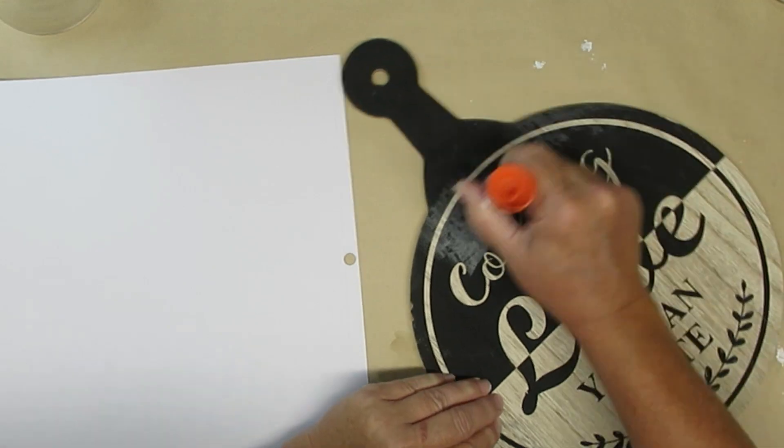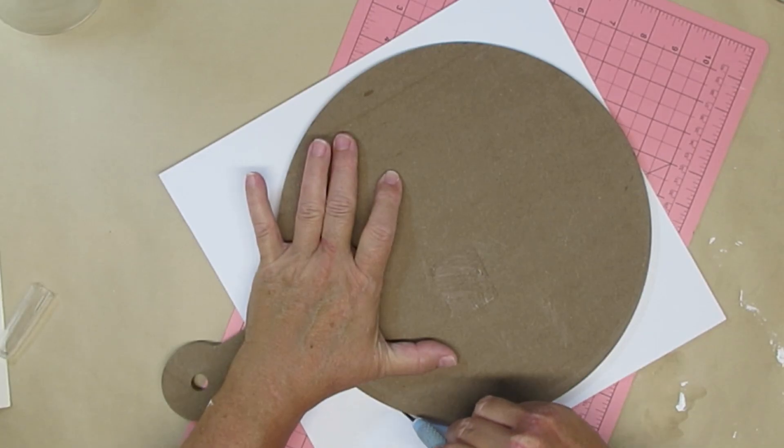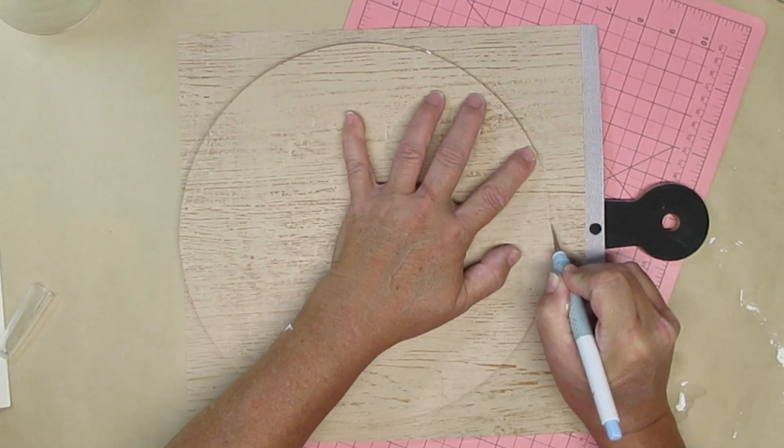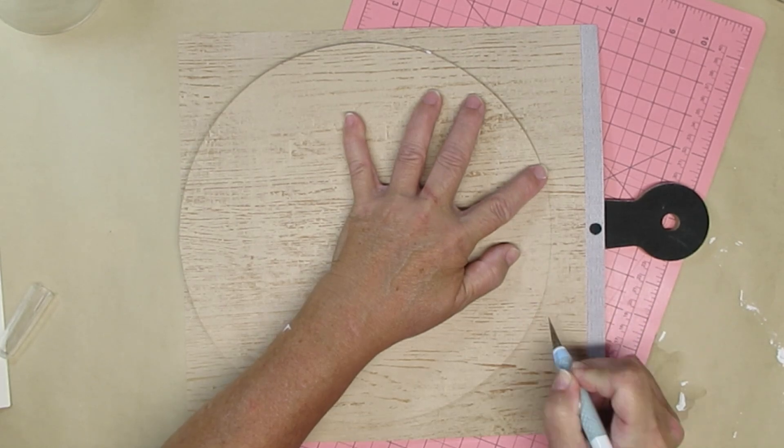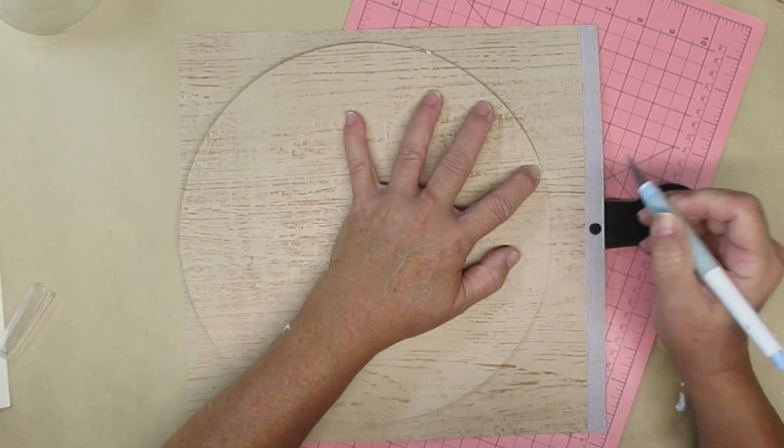Once the paper has had a couple minutes to dry I'm going to flip it over and using my craft knife I'm going to just trim off the rest of the paper. Where the handle starts I'm just going to freehand cutting that into a bit of a round so both of the edges meet up and that will leave the handle black.